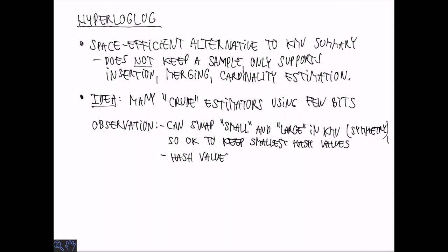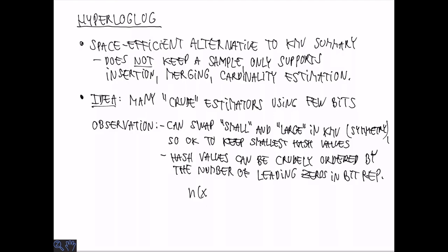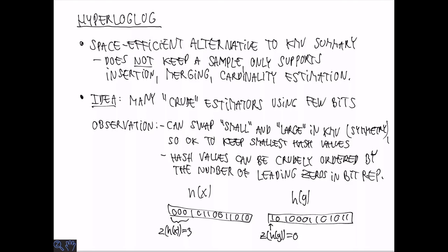An observation we can make is that we can crudely order hash values by the number of leading zeros in the bit representation of the hash values. For example here h has three leading zeros and we'll denote this number of leading zeros as rho of the hash value h. Another hash value might look like this with a 1 in the first place, so rho of h is 0. Just storing the rho value rather than the hash itself is cheaper than storing the hash. If the hash is order log n bits for example, we can store the number of leading zeros in log log n plus a constant number of bits. In practice, log log n for any reasonable value of n is something like 6 to 8.